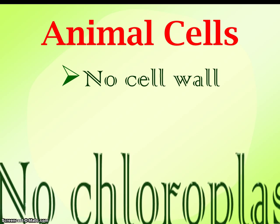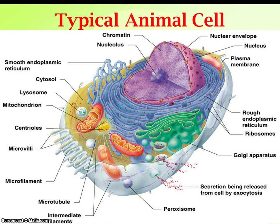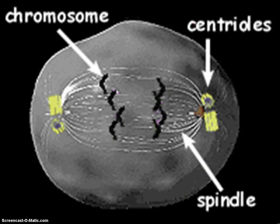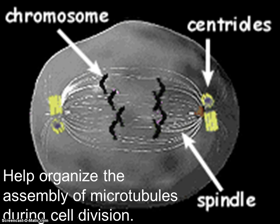Animal cells have no cell wall, no chloroplasts, and they have things called centrioles. Here's a picture of an animal cell, color-coded to see the different parts. Still have a nucleus, rough endoplasmic reticulum, smooth endoplasmic reticulum, Golgi, mitochondria, and lysosomes — but no cell wall, no big central vacuole. They do have centrioles, which are bundled microtubules used during cell division to aid in an animal cell's process of making more animal cells.